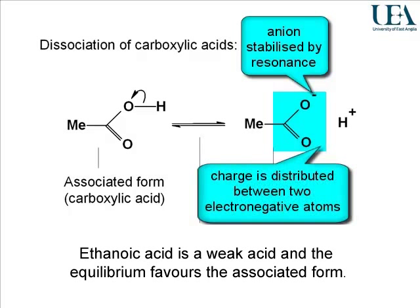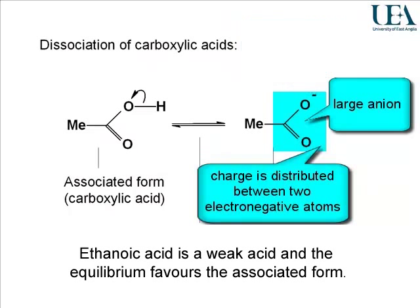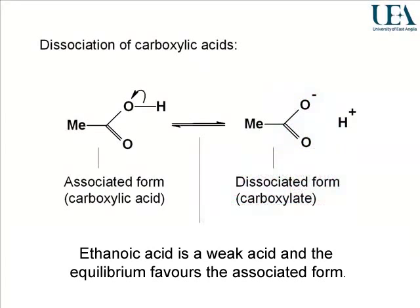We have the electronegativity of the oxygen atoms. We have the concept of delocalization of charge, sharing the charge almost exclusively between two of the oxygen atoms — so that's two electronegative oxygen atoms stabilizing charge. We've got a delocalized anion, which is large. So we have electronegativity twice over and a large anion — a lot of charge-stabilizing factors. Carboxylic acids are one of the most stable types of anions you're going to meet in organic chemistry.